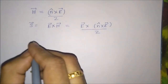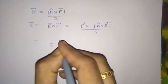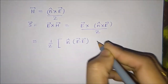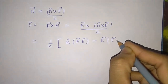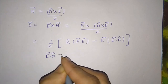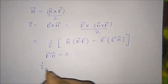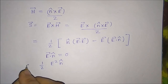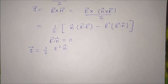Using the vector identity A cross (B cross C), this becomes (1/z)(n̂ (E dot E) minus E (E dot n̂)). Since E dot n̂ equals zero, the above becomes (1/z) E² n̂. That is, the Poynting vector S equals (E²/z) n̂.